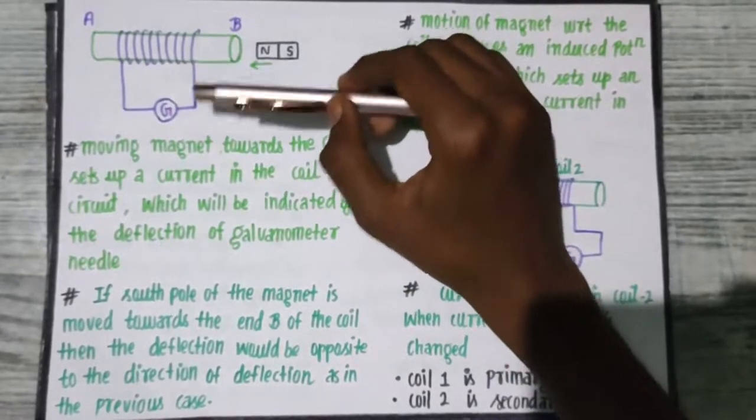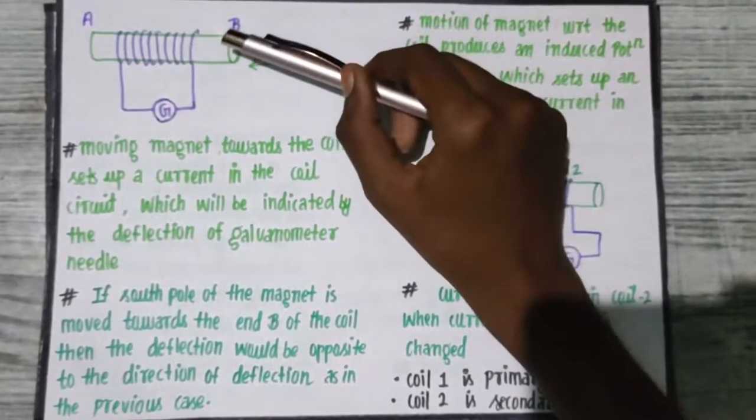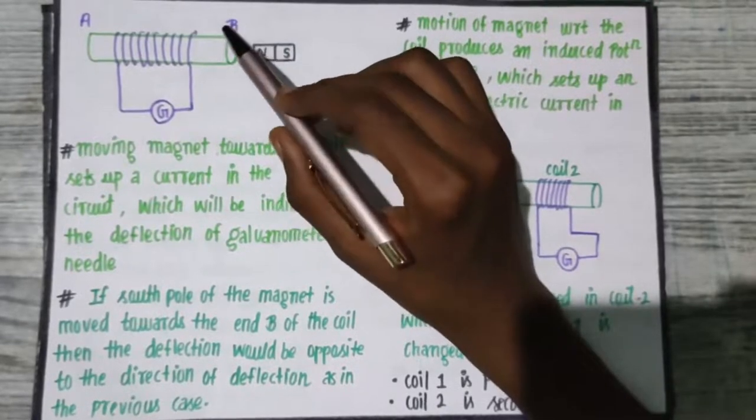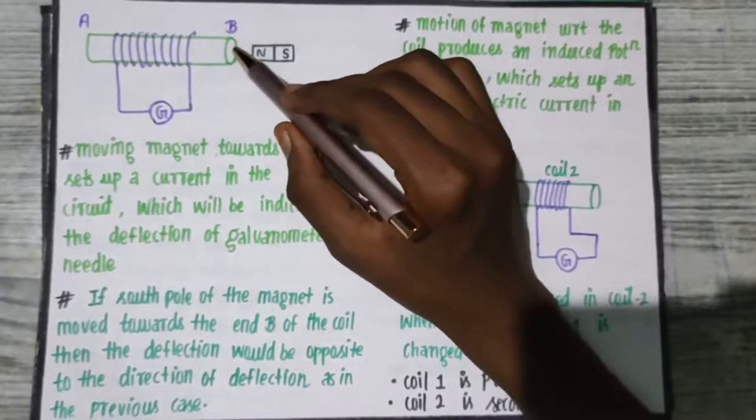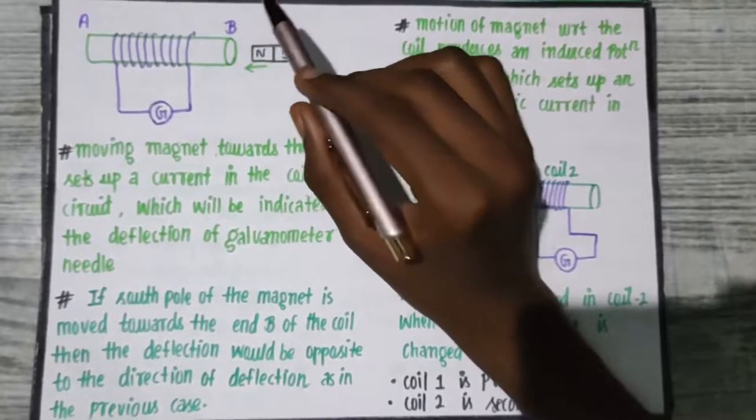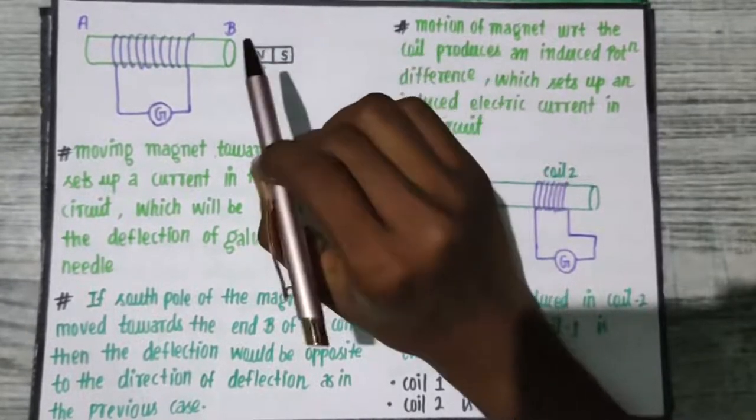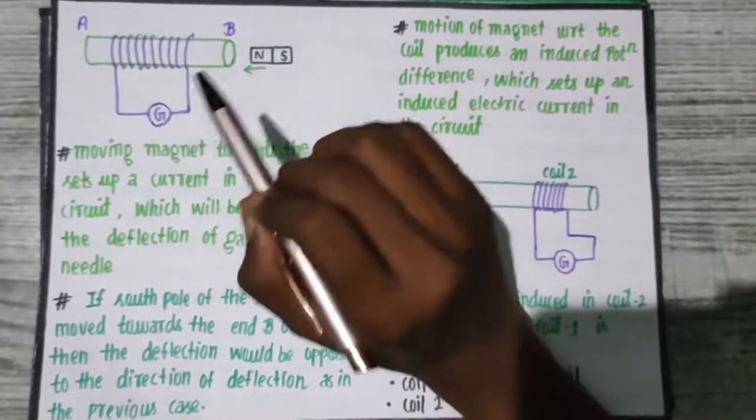See this is a coil. We have wrapped it around an iron rod and connected it to a galvanometer. Why have we connected to a galvanometer? Because we have to detect the induced current. If a current is generated, that is induced current. That is a galvanometer.